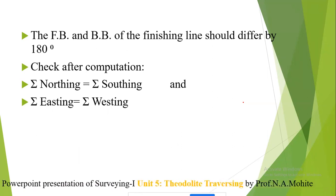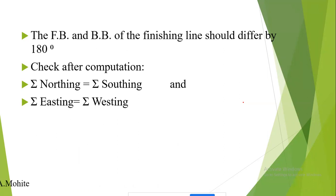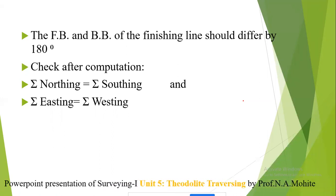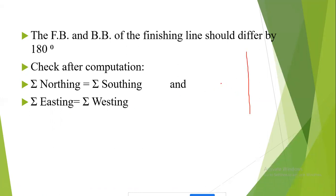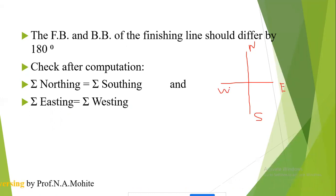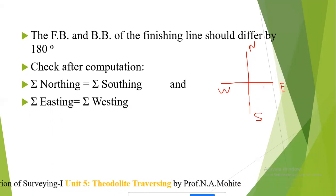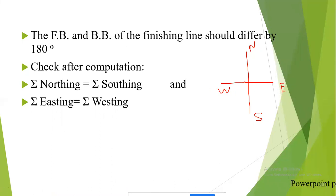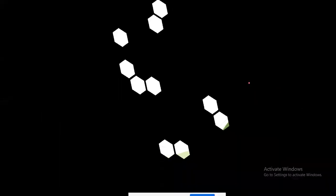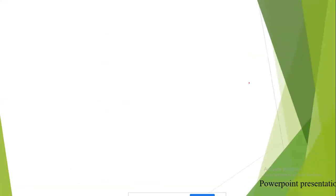This is required for traversing, where we compute latitude and departure — calculating northing and southing using the formula L cos θ, and easting and westing using L sin θ. The summation of northing should equal the summation of southing, and the summation of easting should equal the summation of westing, so that the origin comes out to be the same. These were the checks for the closed traverse.